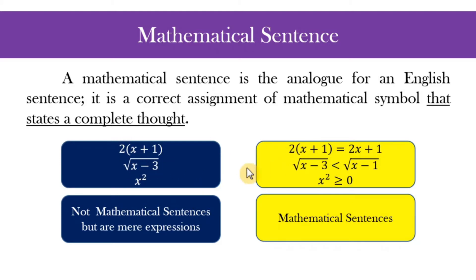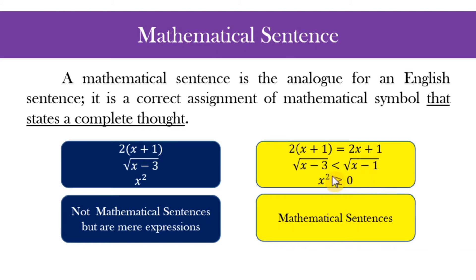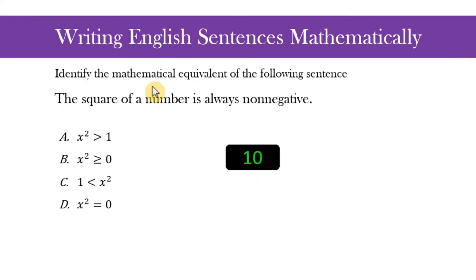In the expression x minus three, it becomes a sentence when we say the square root of x minus three is less than the square root of x minus one. Also, x squared is just an expression, but when we say x squared is greater than or equal to zero, it becomes a mathematical sentence — we are stating that the left side is greater than or equal to zero.